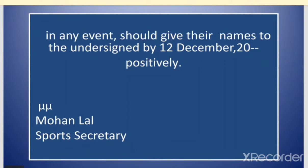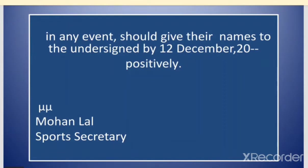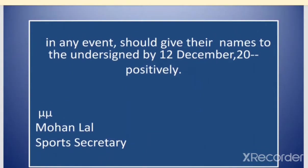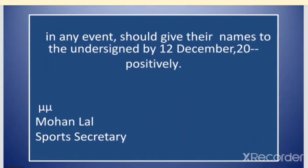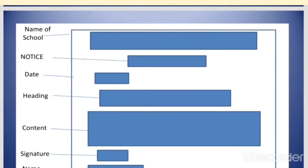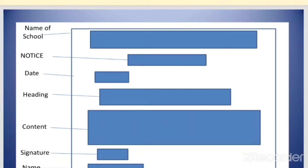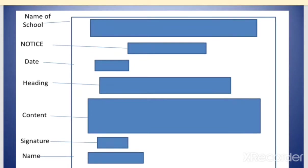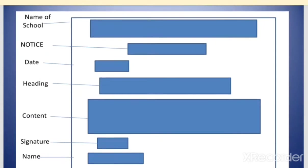You can see how the important points discussed earlier are mentioned in this notice. As we see at the end, all three points — signature, name, and designation of the person issuing the notice — are mentioned very clearly. Now we will discuss the format of writing a notice in detail. The first column is for writing the name of the institution. After that, the next column is for writing the word NOTICE.